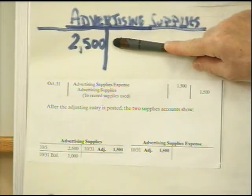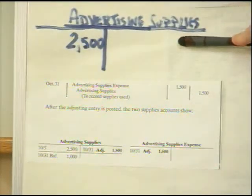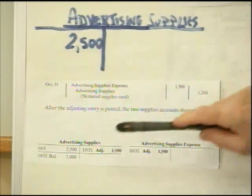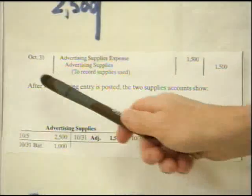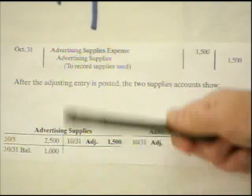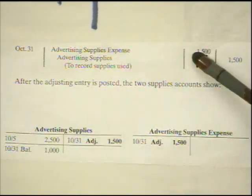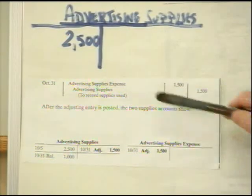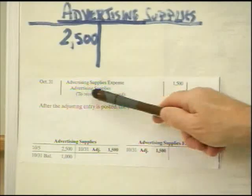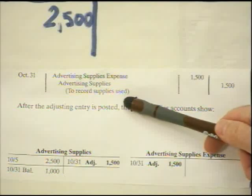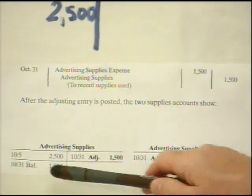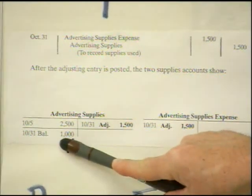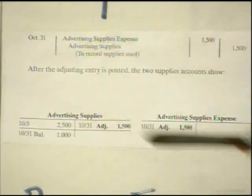If there's only $1,000 left of actual supplies, it tells us we used the remainder — the difference of $1,500. So we need to take $1,500 worth of supplies out and record them as an expense. On October 31st, the following entry goes in our general journal: we debit advertising supplies expense for $1,500, and credit advertising supplies for $1,500. The account starts at $2,500, the adjustment is $1,500, and the ending balance is $1,000.